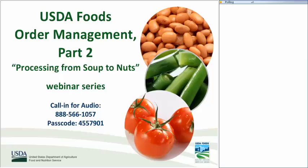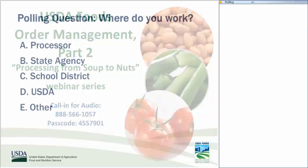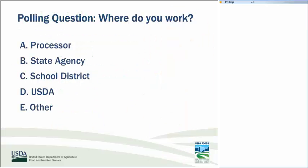We have our first polling question: Where do you work? Are you a processor, state agency, school district, USDA employee, or other? It looks like about a quarter of you today are processors, followed by about 20% state agency staff. We're glad all of you are able to join us and hope you find the information useful for your work.